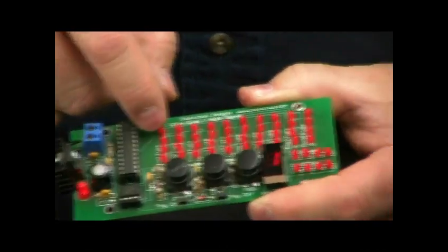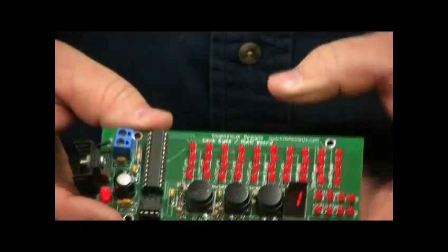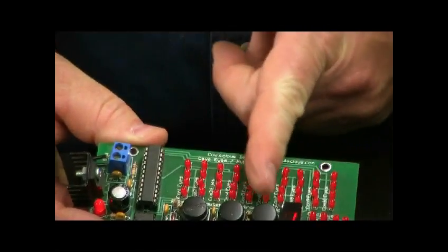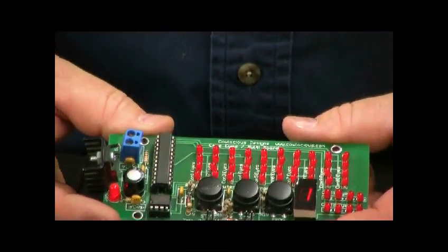So each one of these LEDs represents two on a harness. So each set of lights here represents a harness.